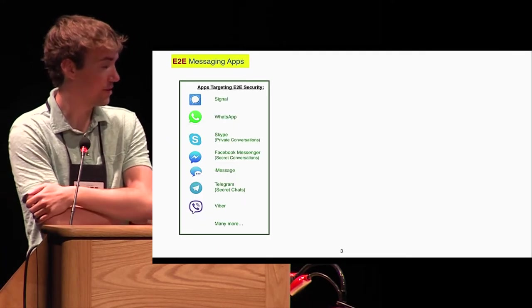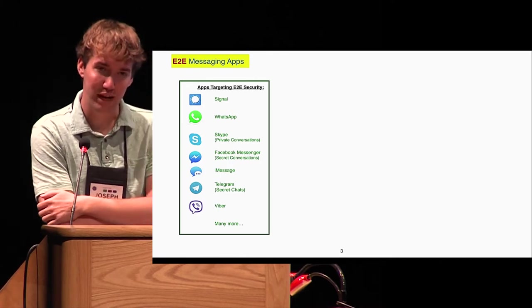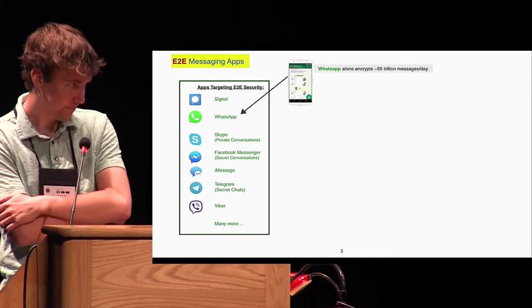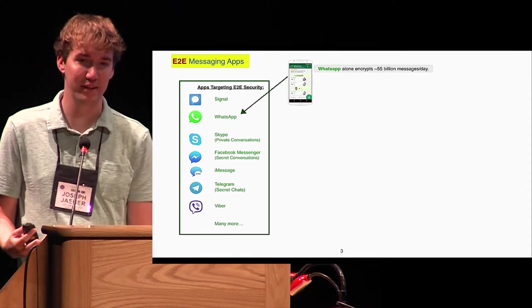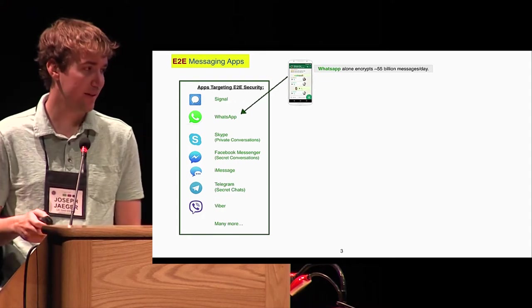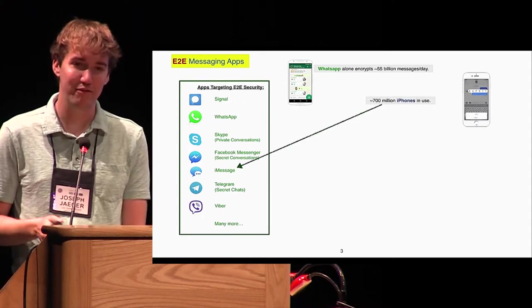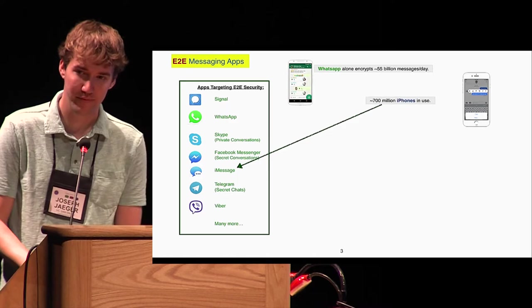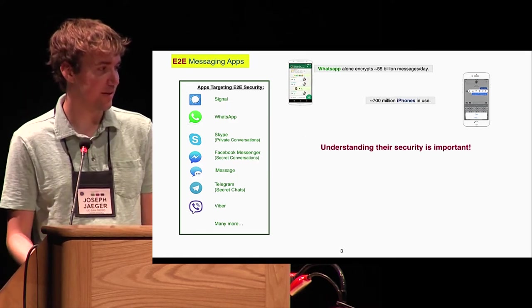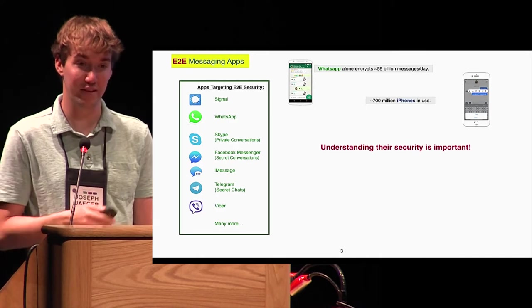Here I show several examples of messaging apps which aim for end-to-end encryption. To give a sense of scale, WhatsApp alone encrypts around 55 billion messages every day. There's somewhere around 700 million iPhones in use. Given this widespread use, it's important to understand exactly what security they're achieving.